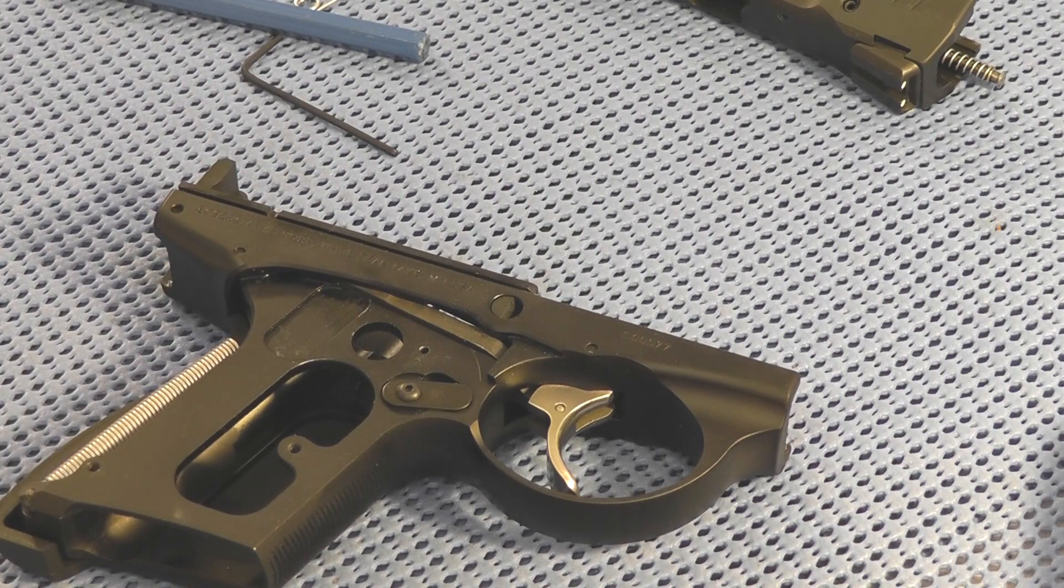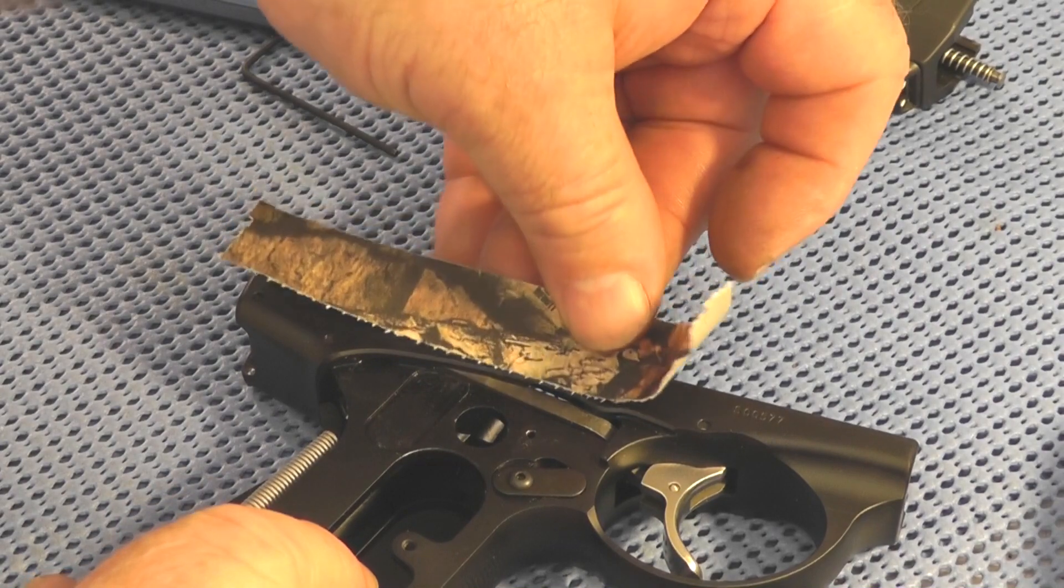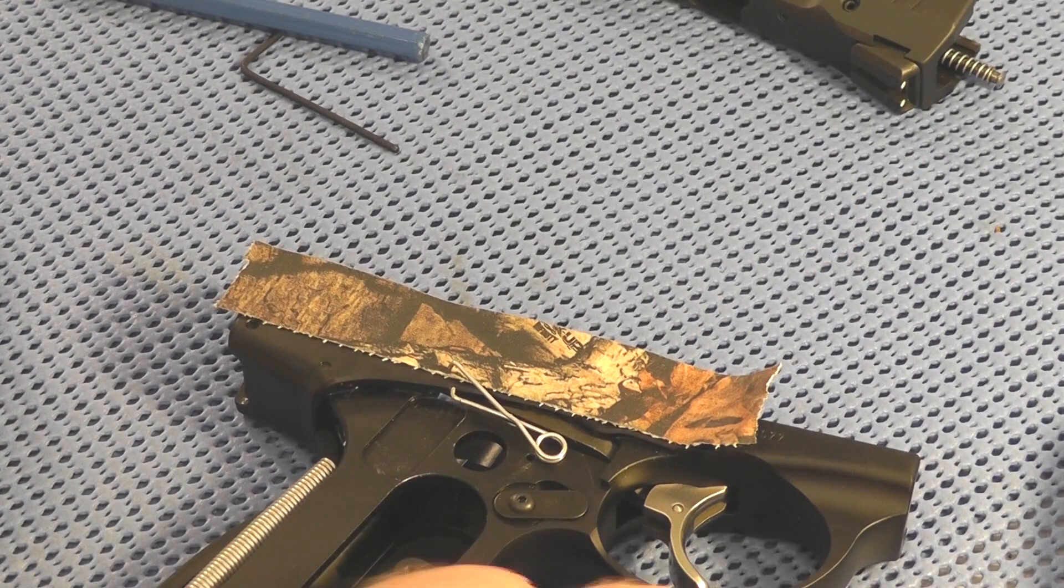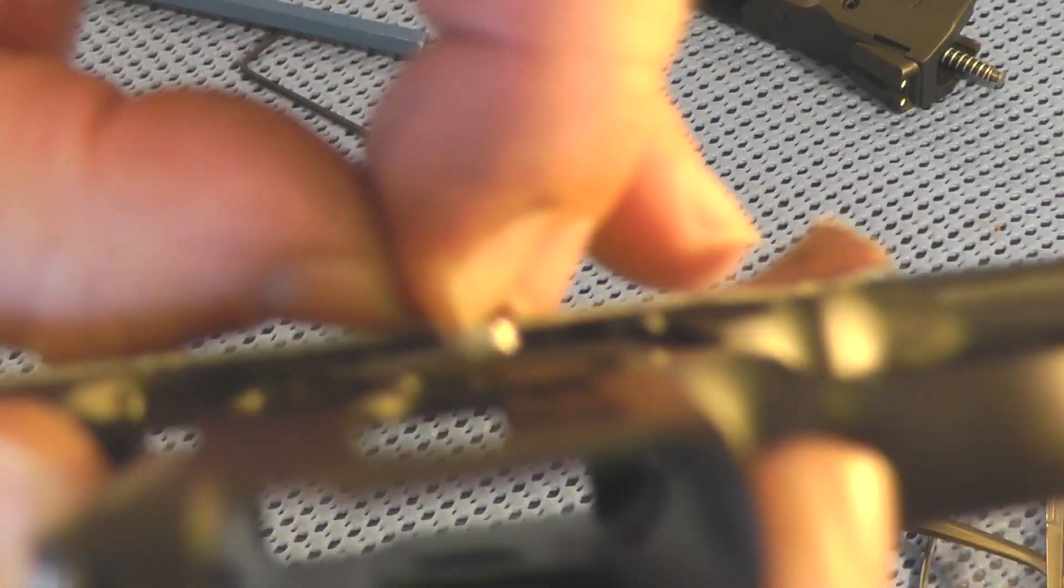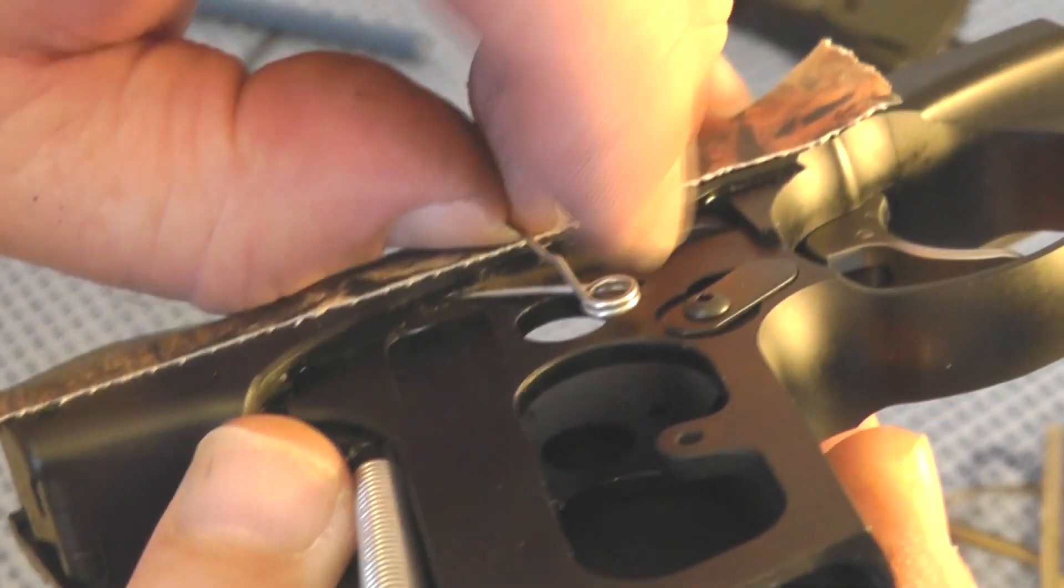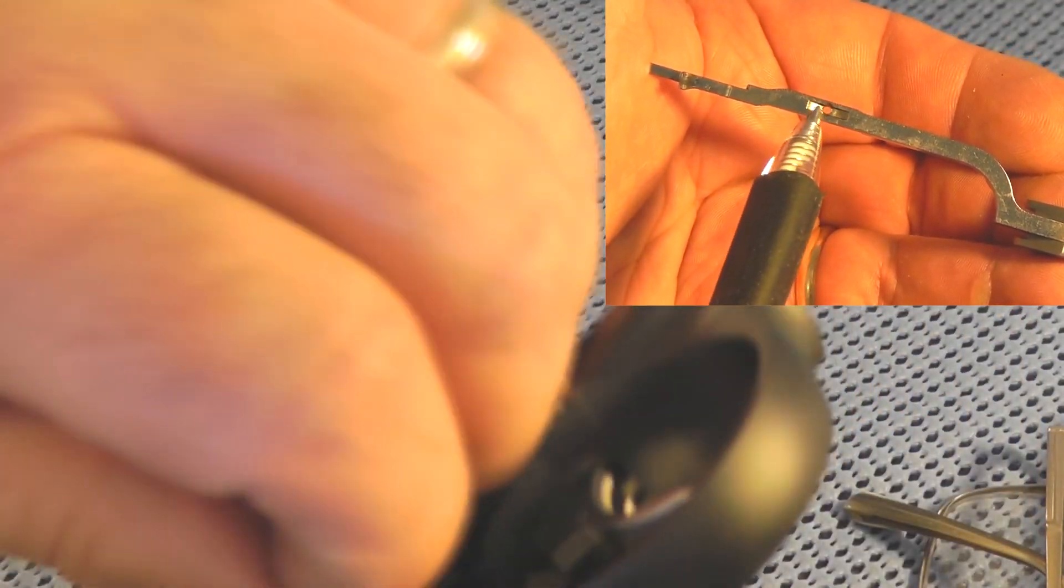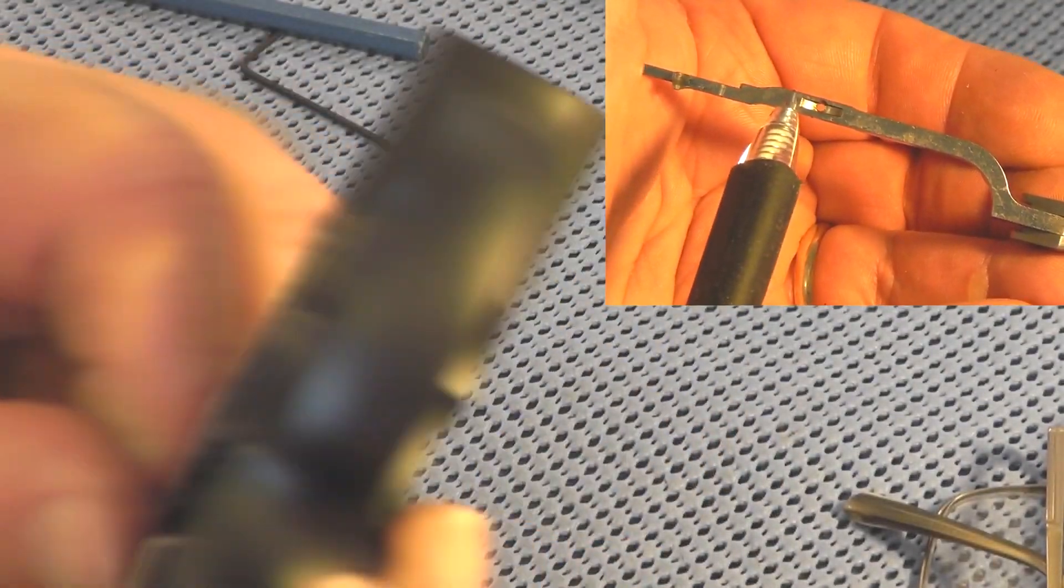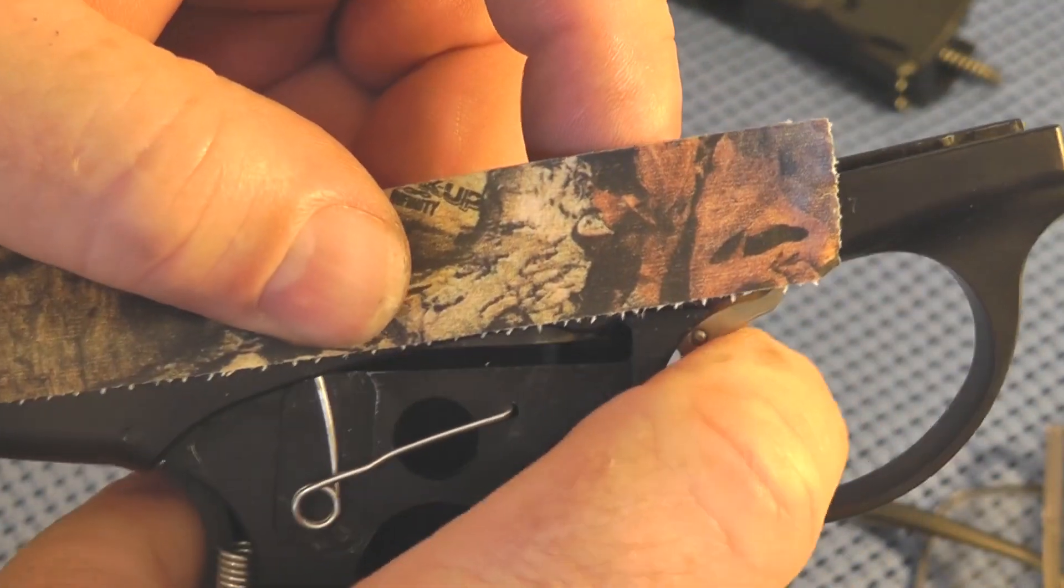Now we're just going to put our transfer bar spring back on. We'll put our tape back on the frame to help protect it. There's a little hole in the transfer bar that the spring goes into. Up there, upper right, you can see the hole that it goes into. So it's pretty simple to put back together.